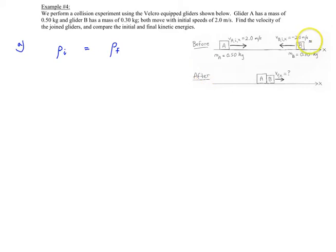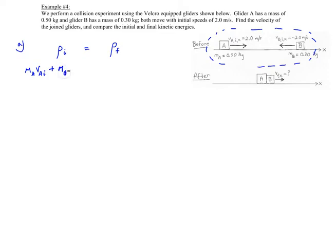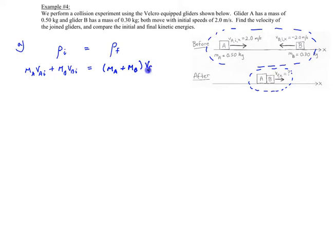Momentum initially equals momentum finally — the same before and after the collision. The initial momentum consists of these two bodies, A and B, which is our system. That is mass of A times velocity of A initial, plus mass of B times velocity of B initial. That equals the momentum afterwards, which is now one joined body: mass of A plus mass of B times the final velocity Vf.